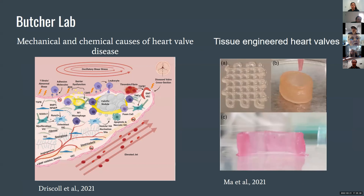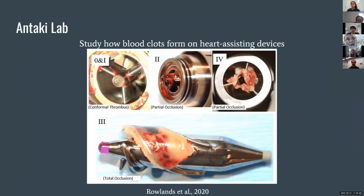Within the Butcher Lab, they study mostly the heart, particularly heart valves. They look at the mechanical and chemical causes for valve diseases — for instance, valves can calcify over time if the conditions are not correct. In addition to studying it, they're also working on making replacement heart valves that can be put in place of damaged heart valves in the future. The Ntaki Lab looks at mechanical devices that are put into the vascular system, such as heart-assisting devices that help push blood through your circulatory system. They look at how these devices can interact with blood in ways that form blood clots and how that can be avoided.